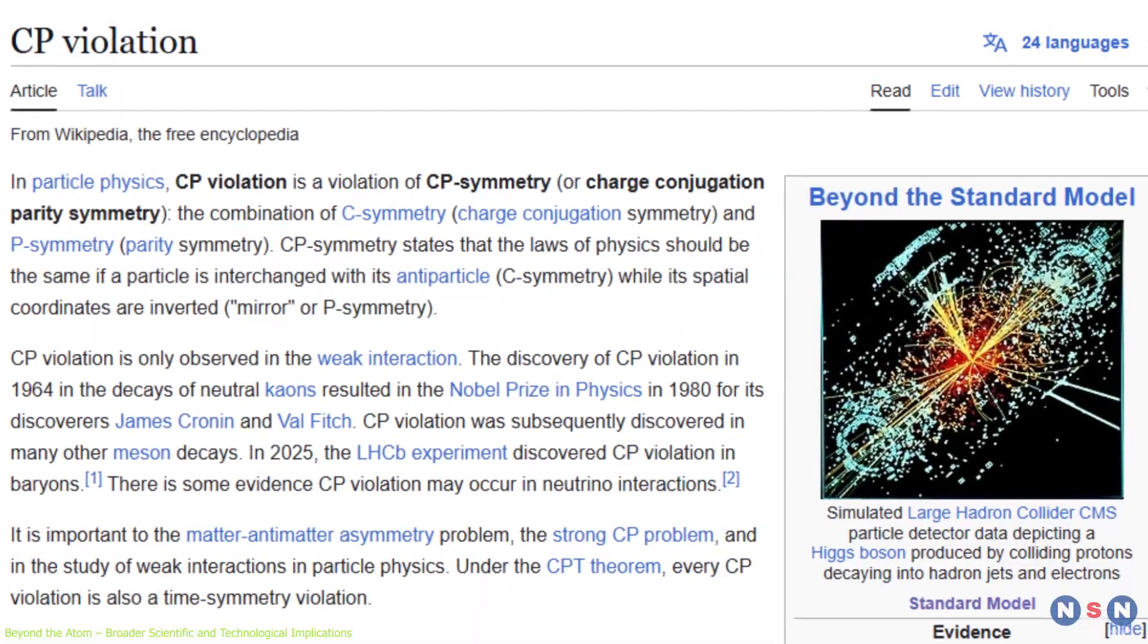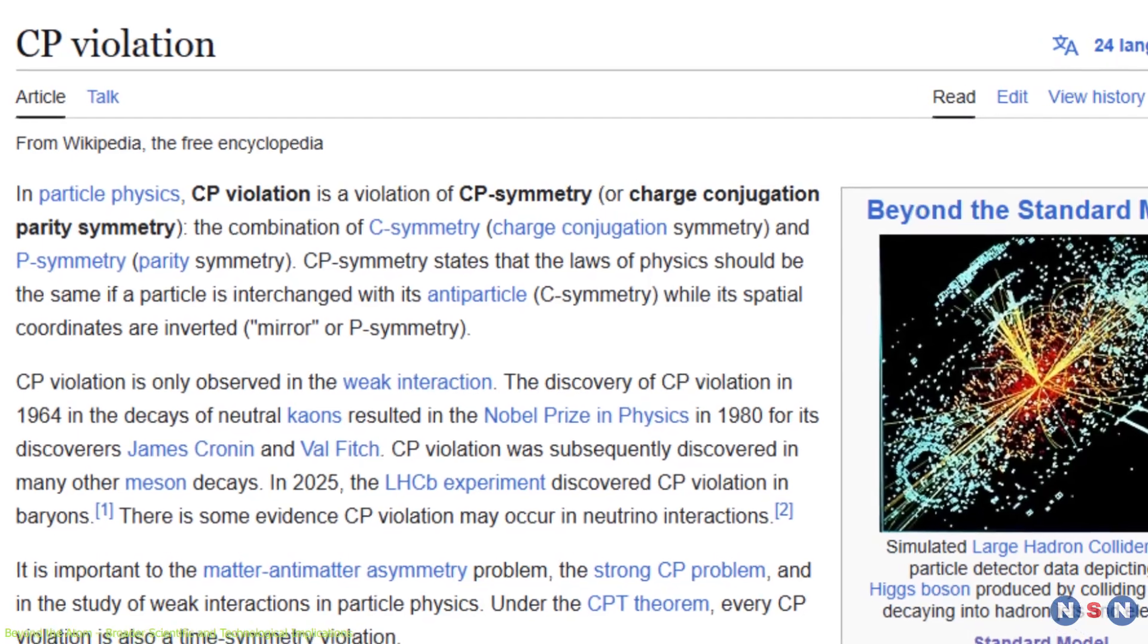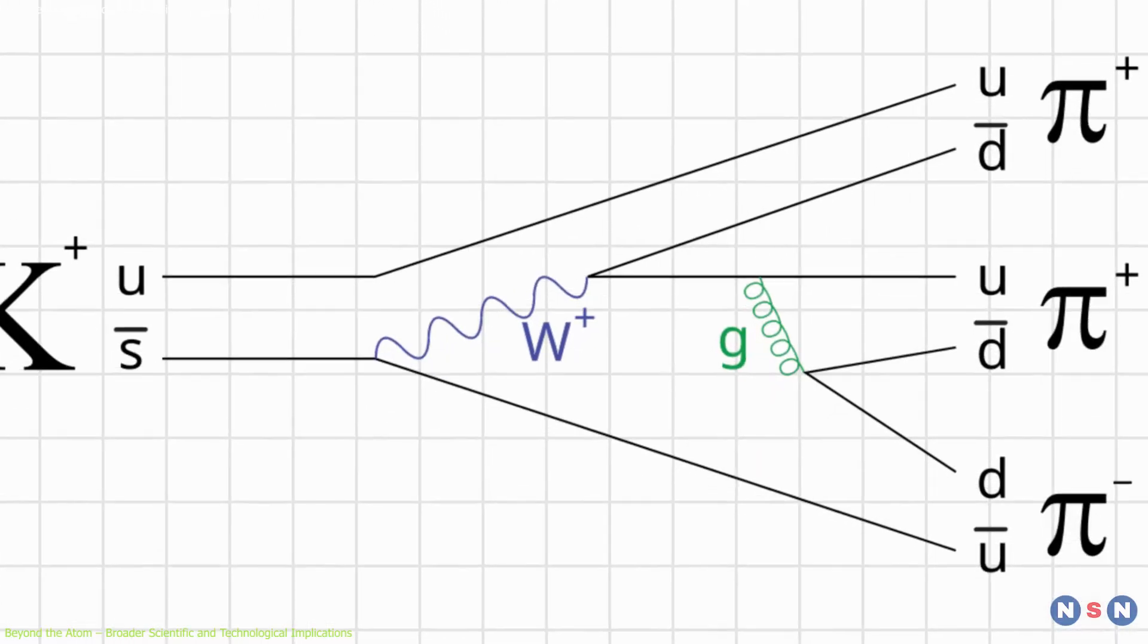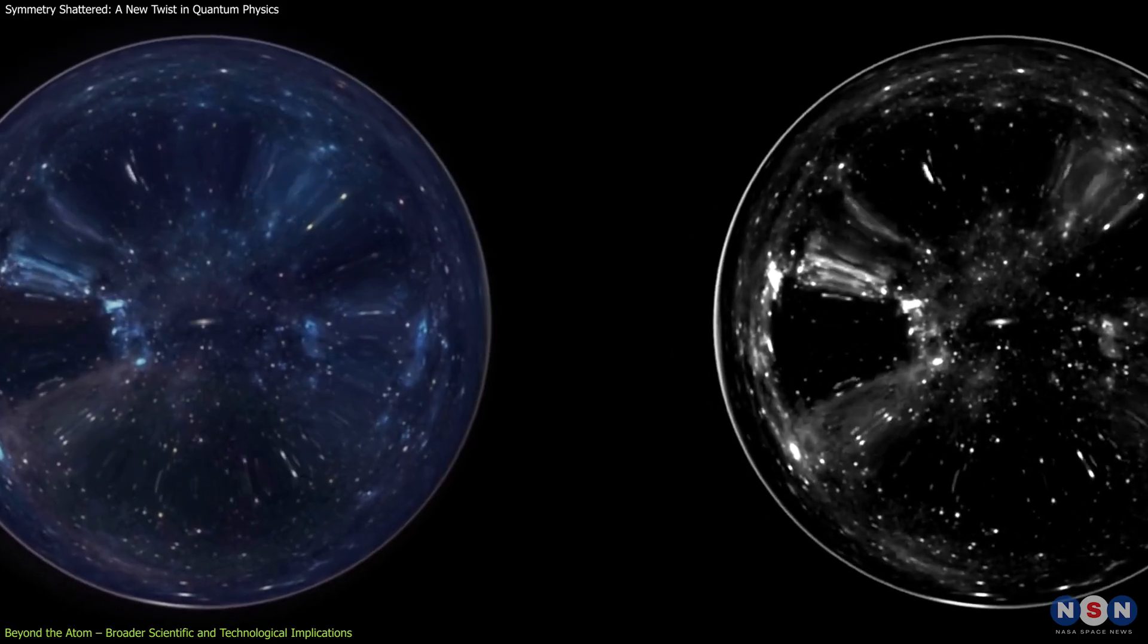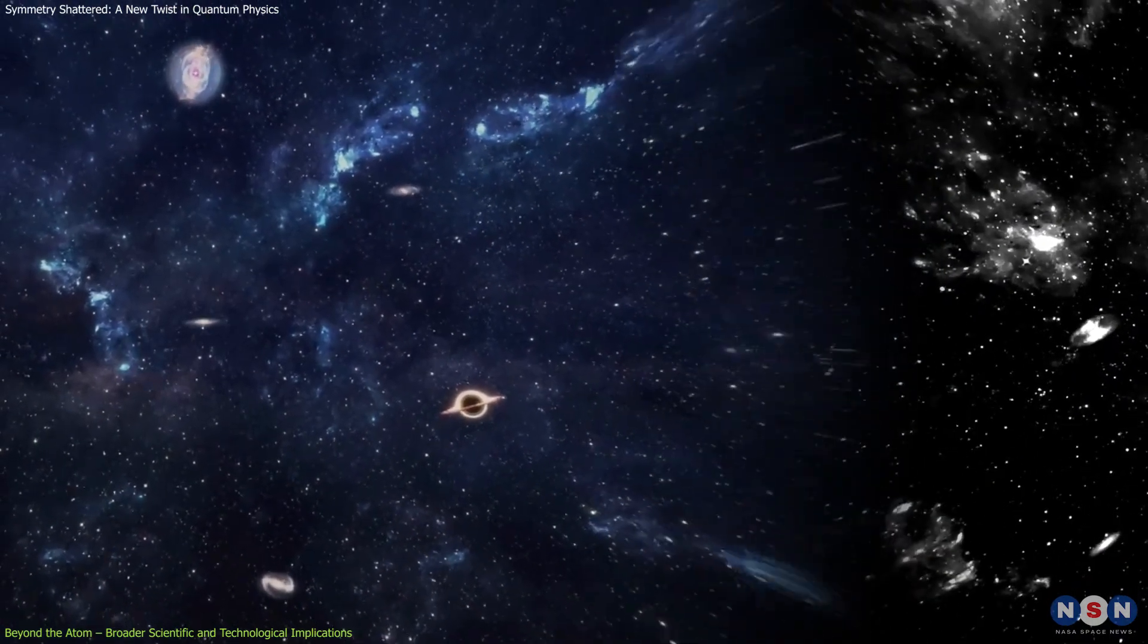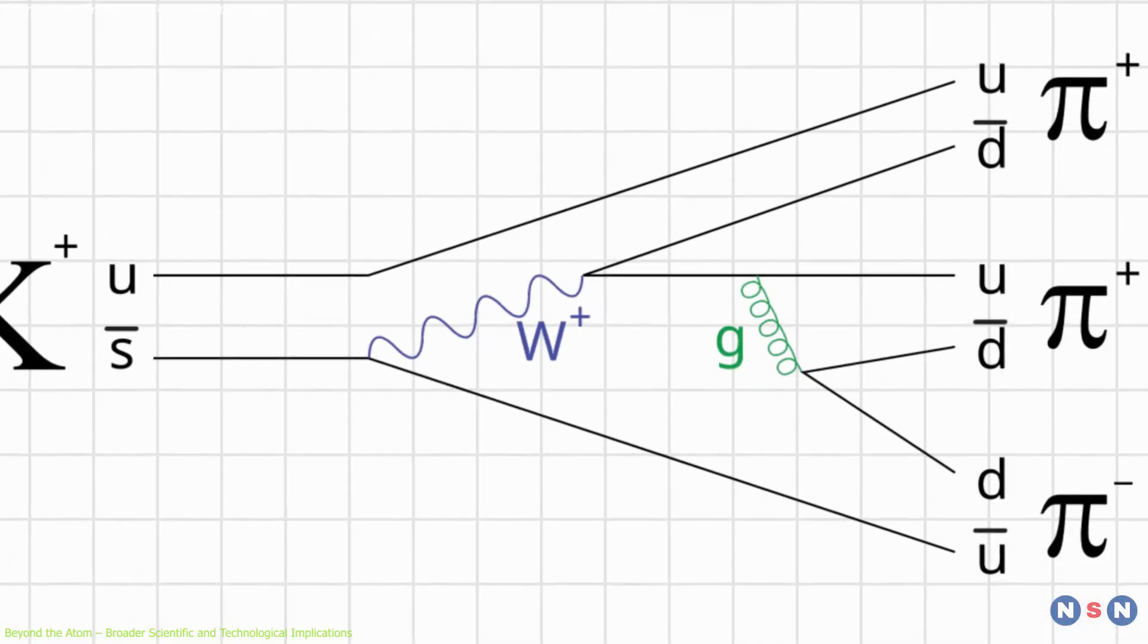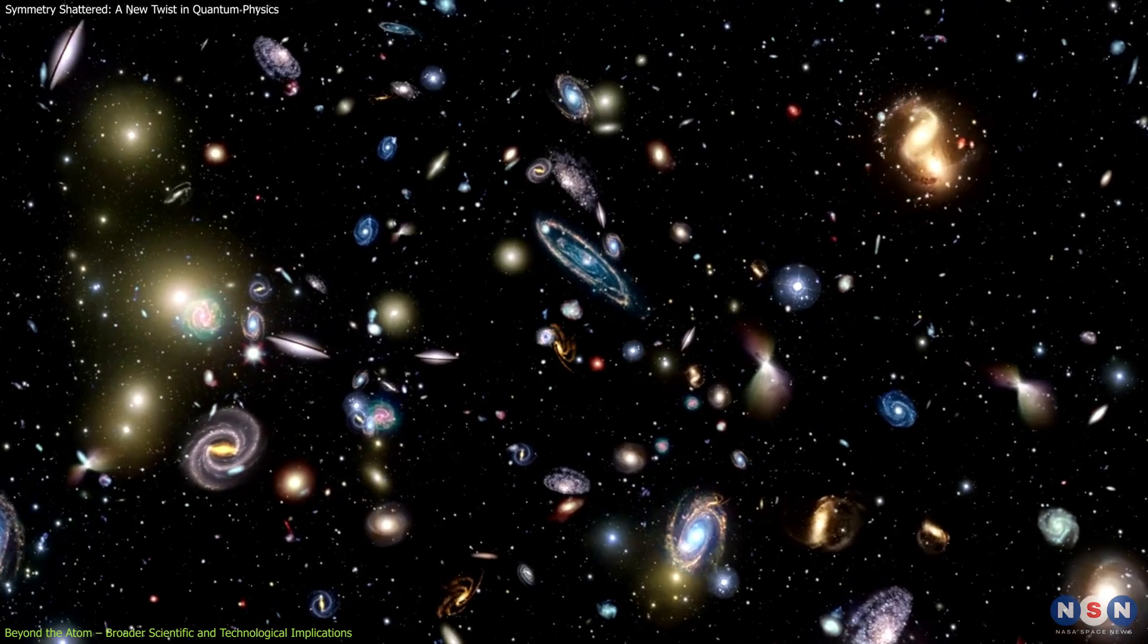One answer may lie in CP violation, where the combined symmetries of charge (C) and parity (P) aren't conserved. First detected in kaon decays, and later observed in B mesons, CP violation suggests nature slightly favors matter over antimatter in certain interactions. These rare, asymmetrical decays might be the key to understanding why our universe exists at all.